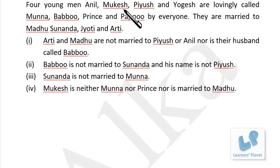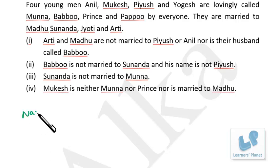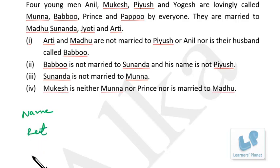Next: four young men — Anil, Mukesh, Piyush and Yogesh — are lovingly called Munna, Babbu, Prince and Pappu. They are married to Madhu, Sunanda, Jyoti and Aarti. Three variables: name, pet name and wife.